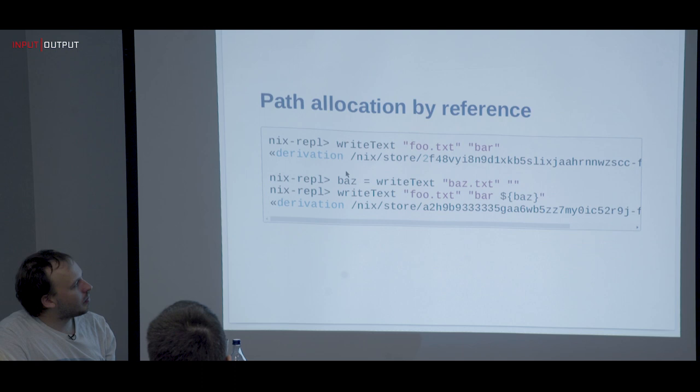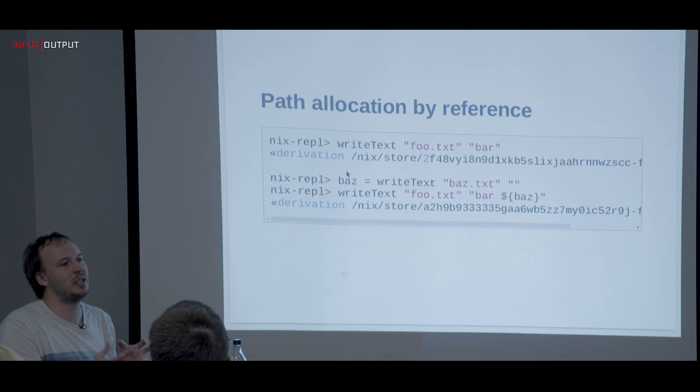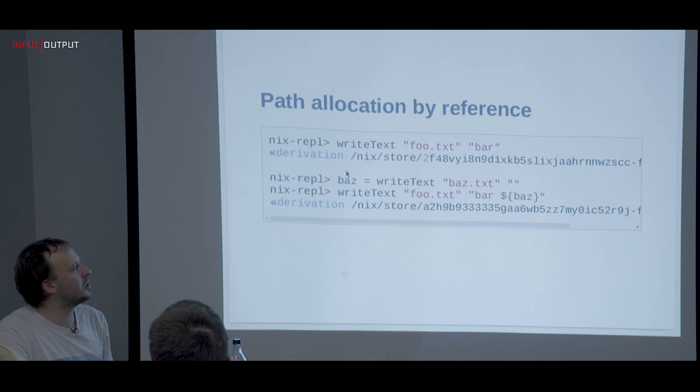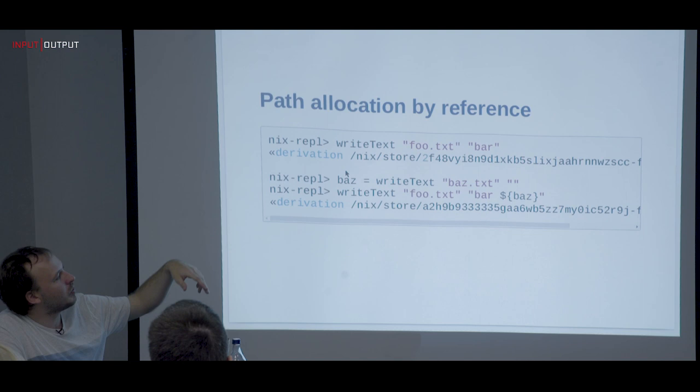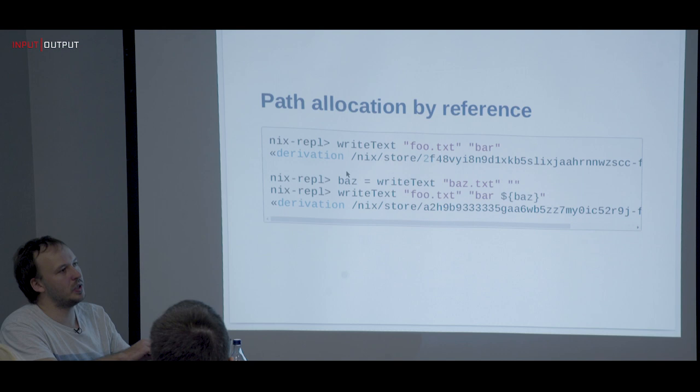One of the major things Nix invented is path allocation — like memory management when we went to high-level languages and you say 'give me some memory'. This is what Nix does with paths: you say give me a path with a certain name and contents, and you have it. You can nest that and it builds the dependency tree. So that's how it collects what belongs together.